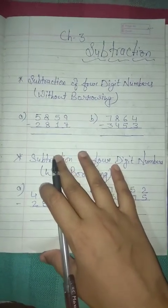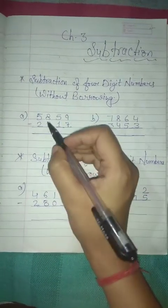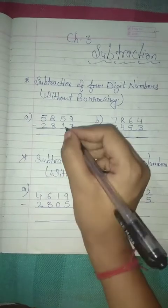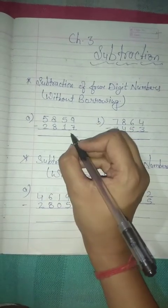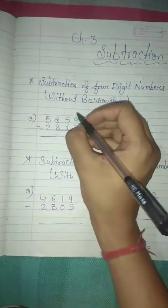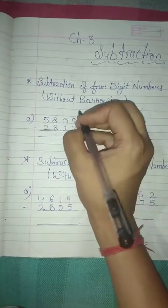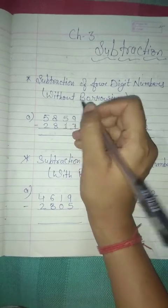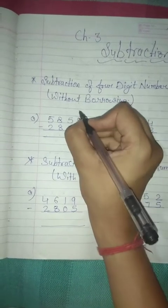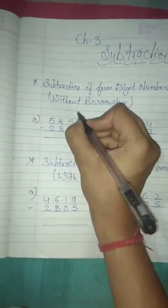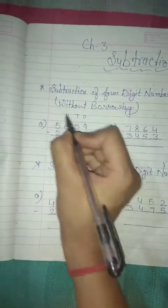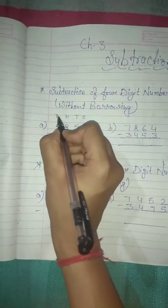So how to do? Look at here — here are some numbers. So firstly write down the places. The first place is the ones place, then tens, then hundreds, then thousands.